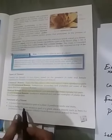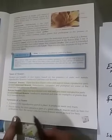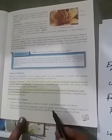The flower is the reproductive part of a plant. It produces seeds and fruits. Flower, being the most attractive part of a plant, attracts insects such as bees for pollination.